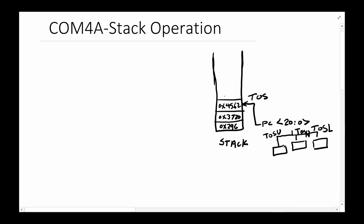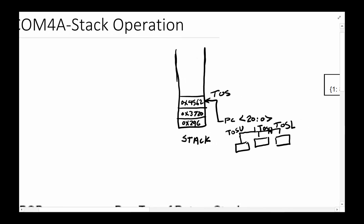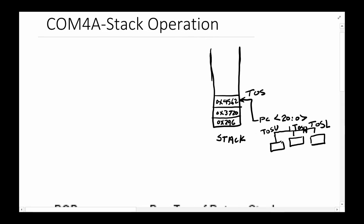If I want to see something below the top of stack, I have to get rid of the top item. There are multiple ways of getting rid of it, and we'll talk about those as well. Once you get rid of it, the top of stack moves to the next one. For example, right now top of stack lower will have 62 hex in it, the next one 045, and the upper byte will have 00.